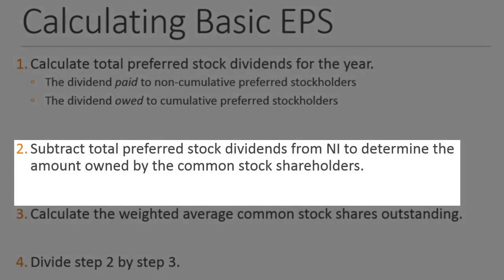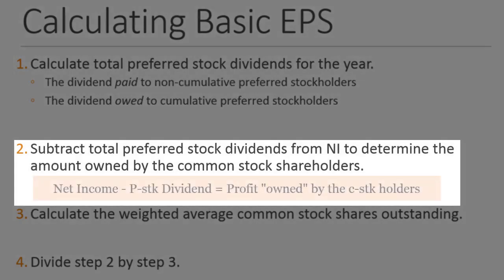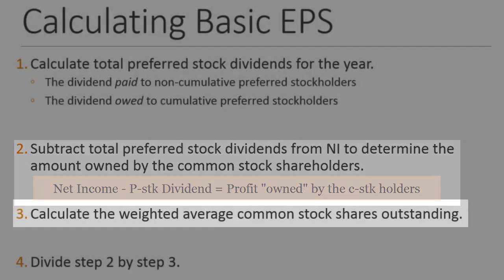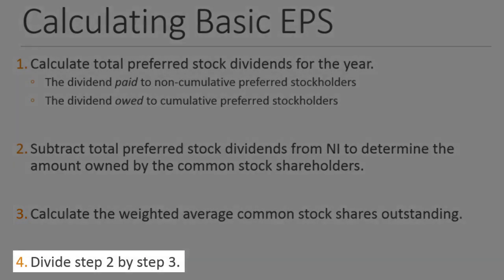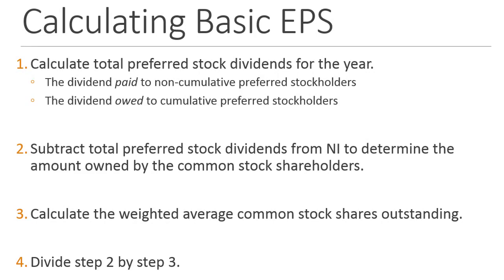Step two: take net income from the income statement and subtract the total preferred stock dividend from step one — that gives us our numerator for EPS. Step three: calculate the weighted average common stock shares outstanding. Step four: divide the numerator from step two by the weighted average from step three for our earnings per share, rounded to the nearest penny as required by GAAP.